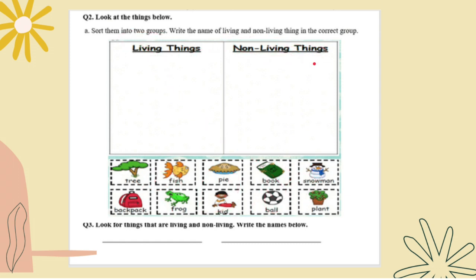A tree is a living thing and so is the fish. This pie will go to this group non-living, as well as the book, snowman, and the backpack. Frog is a living thing, even this kid, this ball is a non-living thing, and the plant is a living thing.